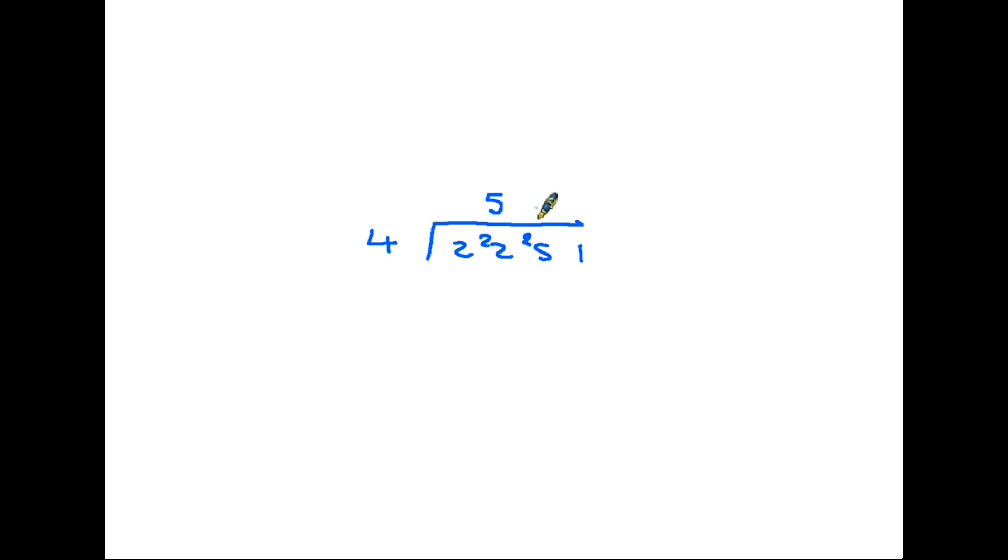How many fours in 25? Well, the answer to that is 6. Now 6 fours are 24, we have 25, so there's 1 left over. That goes onto the next column. So we're now being asked how many fours are there in 11? Well, the answer to that is just 2. 2 fours are 8, we have 11, so there is 3 left over and we have to carry the 3.